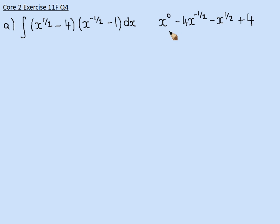So tidying this up, x to the zero is 1 plus the 4 is 5, minus 4x to the minus 1 half, minus x to the half. So I'm going to have to integrate this tidied up version.